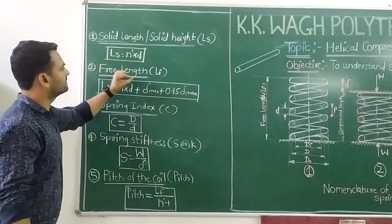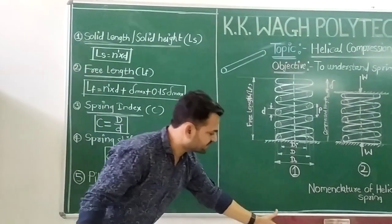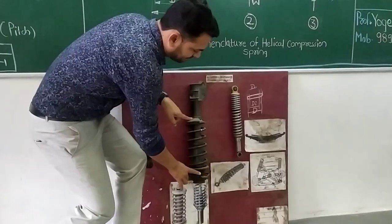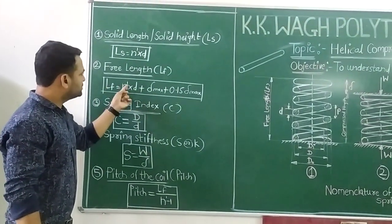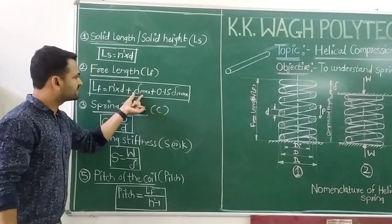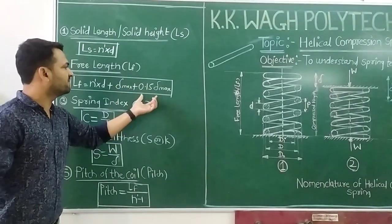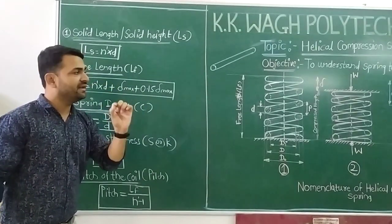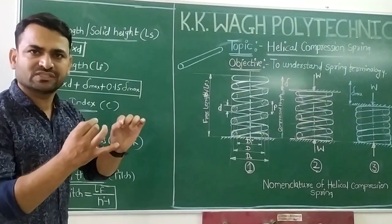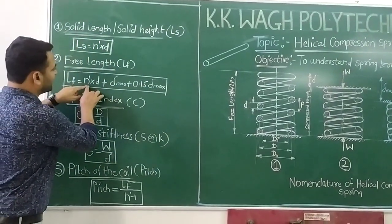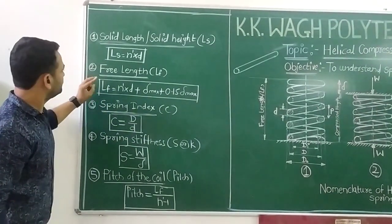Free length, denoted by LF, is the length of the spring in the unloaded condition. The formula is: LF = n' × d + δ_max + 0.15 × δ_max, which equals solid length plus maximum deflection plus 0.15 times maximum deflection. The 0.15 factor accounts for the small clearance gap that remains between coils when the spring is fully compressed.